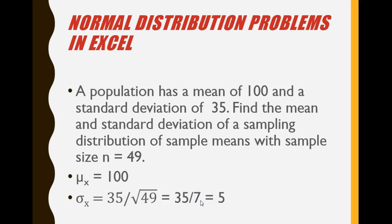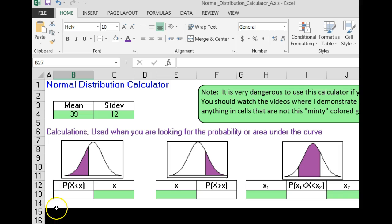Before we yell bazinga, I want to show you a couple of things about the normal distribution calculator. Remember that if you're doing z-score type problems, you're going to put in a mean of 0, the standard deviation of 1.